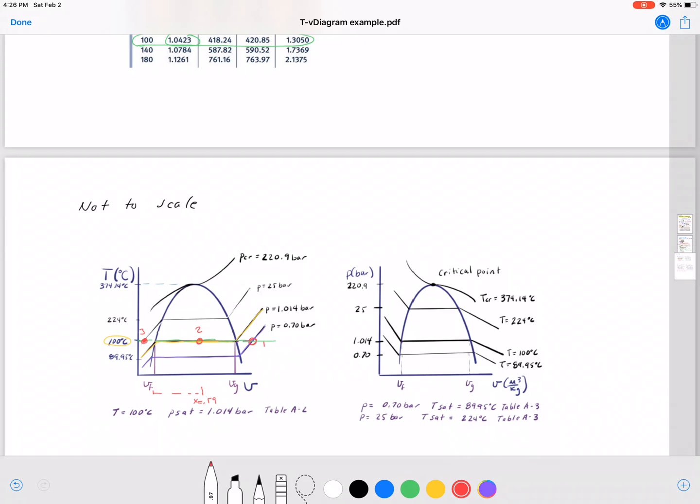We're all at 100 degrees Celsius, so we're along this line somewhere for all three of these states, but where it crosses at 0.7 bar here is state one.